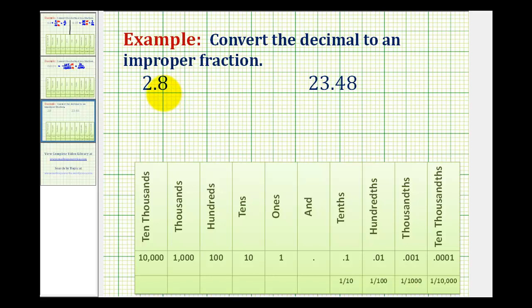So for 2.8, notice the 8 is in the tenths place value. So 2.8 is 2 and 8 tenths. So as a mixed number, it would be 2 and 8 over 10.